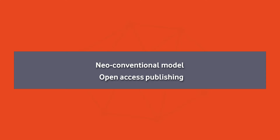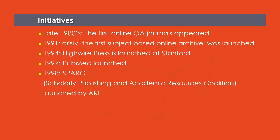We need a new model apart from this toll-based, subscription-based journal access model. This new model is called the open access model. Looking at the history, the open access movement started in the 1980s — the first online open access journal appeared in the 1980s. Then physics people took the lead: they developed arXiv as a repository where preprints of articles written by faculty members of Los Alamos were donated, and physicists across the world could access that repository. HighWire Press was launched at Stanford University in 1997, and PubMed was launched as an open access dataset for the biological sciences.